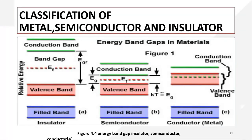In the case of an insulator, the band gap between the conduction band and the valence band is very large. No electron can move from the valence band to the conduction band, even at room temperature, because very high energy is required. So no conduction is possible in the case of insulators.